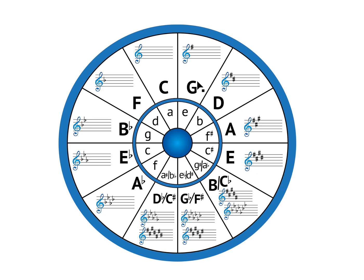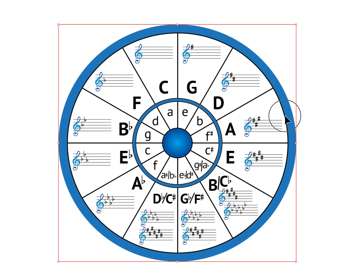First, what we're looking at here is the standard circle of fifths with key signatures, harmonics, and the relative minors on the inner circle. So that is what we have here.